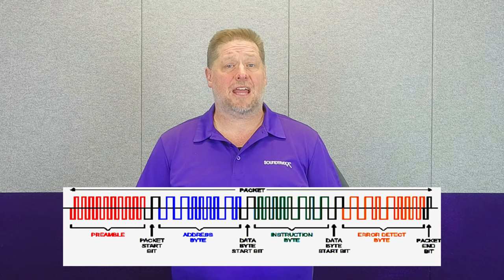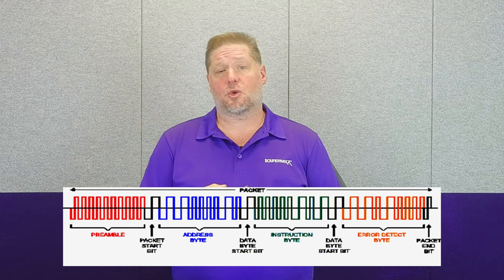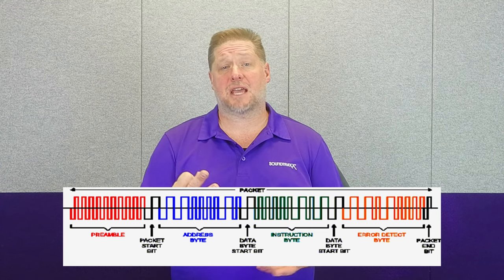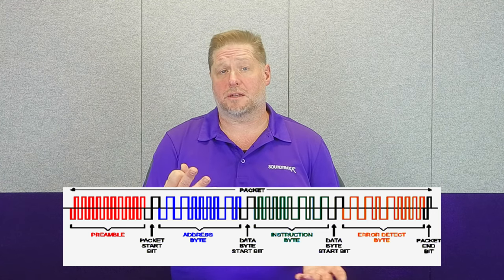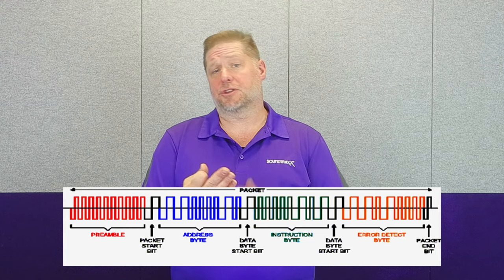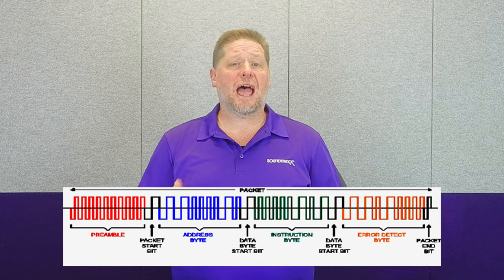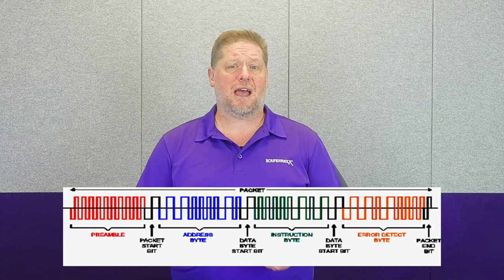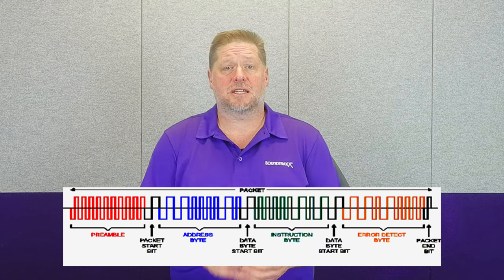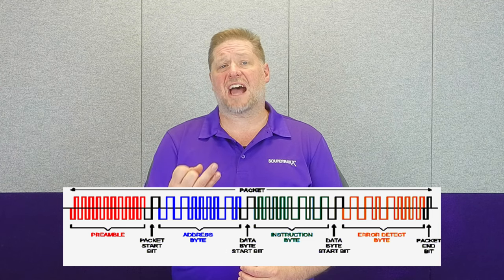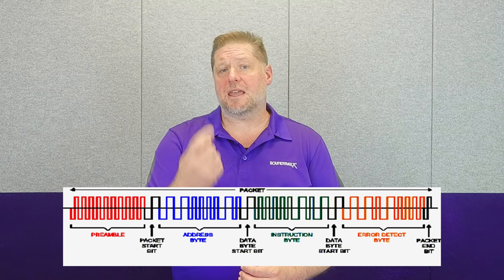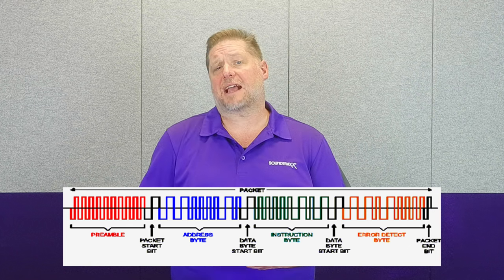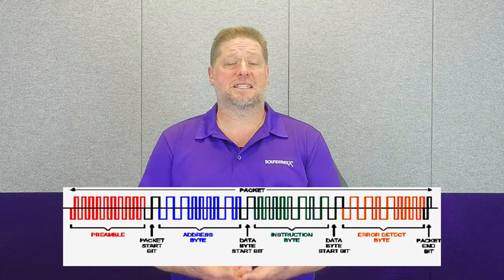The third part is the command or instruction: 'hey everybody, listen up — Locomotive 1000, move forward, speed step 10, turn on F0, turn on F1.' That's the command we tell the decoder to do. The last part is what's called the error byte, basically an end-of-transmission signal. So our DCC command is: 'hey everybody, listen up — Locomotive 1000, do XYZ, end of transmission.' When decoder 1000 receives all four parts of that command, it then performs the task as told.